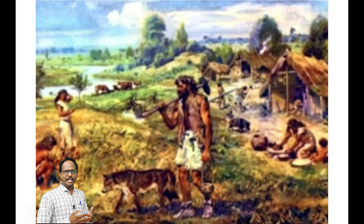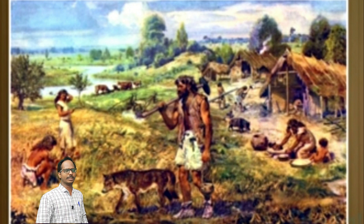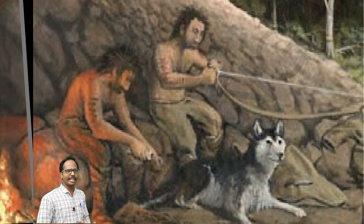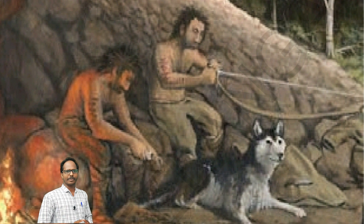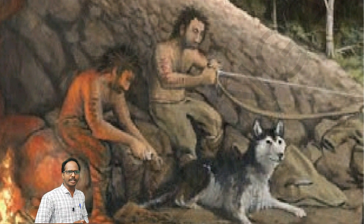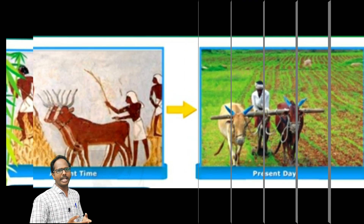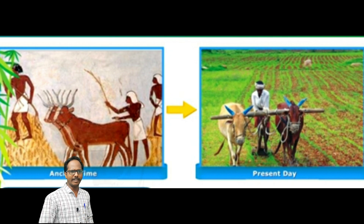In the previous class, we learned that early humans lived in the forest. They hunted wild animals and gathered fruits, roots, and leaves for food. Gradually they learned agriculture. With the help of agriculture, they made food easily and from then onwards they moved steps toward development in their lives.